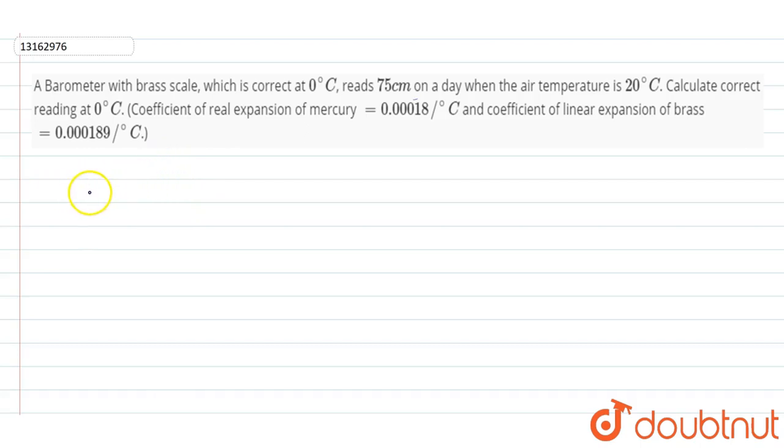Now, first thing is that for a barometer with brass scale, we can write that H₀ equals H times [1 minus (gamma minus alpha) times delta T]. Here, we can write negative sign because the temperature is reduced. If we have to go from 20 to 0, the temperature is negative, so we write the negative sign here.